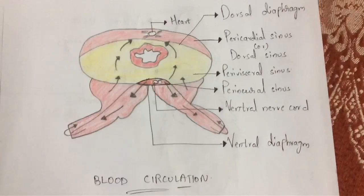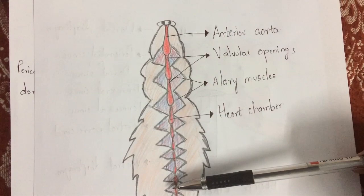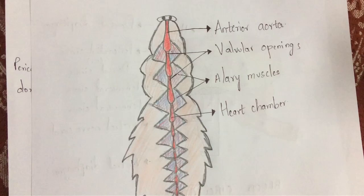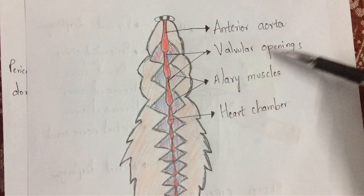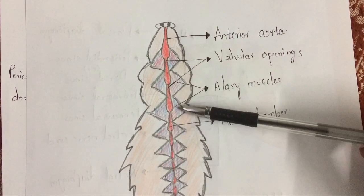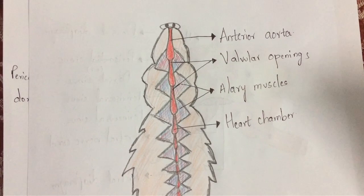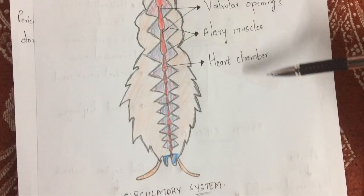Now let us discuss the blood circulation of Periplaneta americana. The first chamber is called the anterior aorta. There are 13 chambers in the heart, and each chamber opens to the next through a valvular opening — allowing blood to move from one chamber to the next. The triangular structures present on opposite sides are known as alary muscles, which are paired structures present throughout.